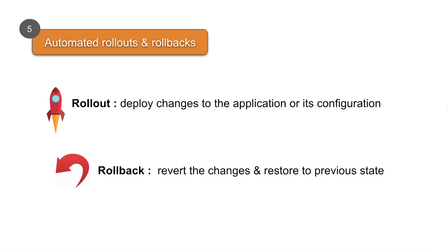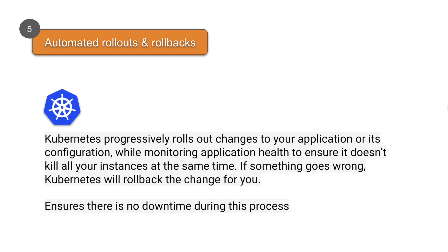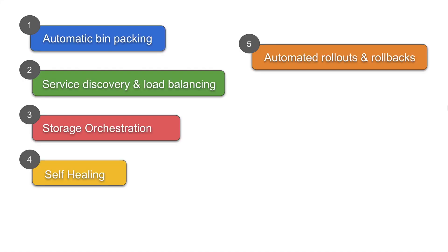Kubernetes takes care of rollout and rollback in an automated way while ensuring there is no downtime of the application. Kubernetes can progressively roll out changes to the application, and while doing so, it monitors the application. If there are any issues or something goes wrong, it will rollback — and all this time the application will be up with no downtime.